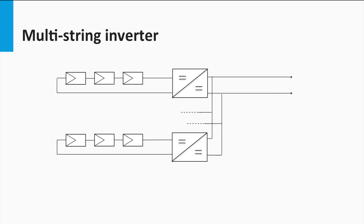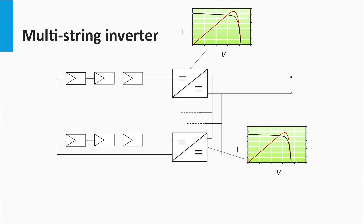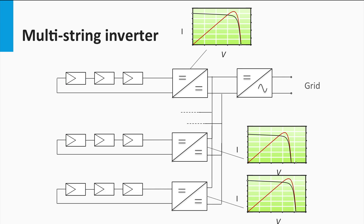Finally, the multi-string inverters. This concept seeks to combine the higher energy yield of a string inverter with the lower cost of the central inverter. Each of the strings is pre-power processed using low power DC-DC converters. Each string has its own maximum power point tracker implemented alongside the DC-DC converter. All the converters are connected via a DC bus to the inverter and ultimately to the grid. Within a certain power range, only a new string with a dedicated DC-DC converter has to be included to expand the system size.